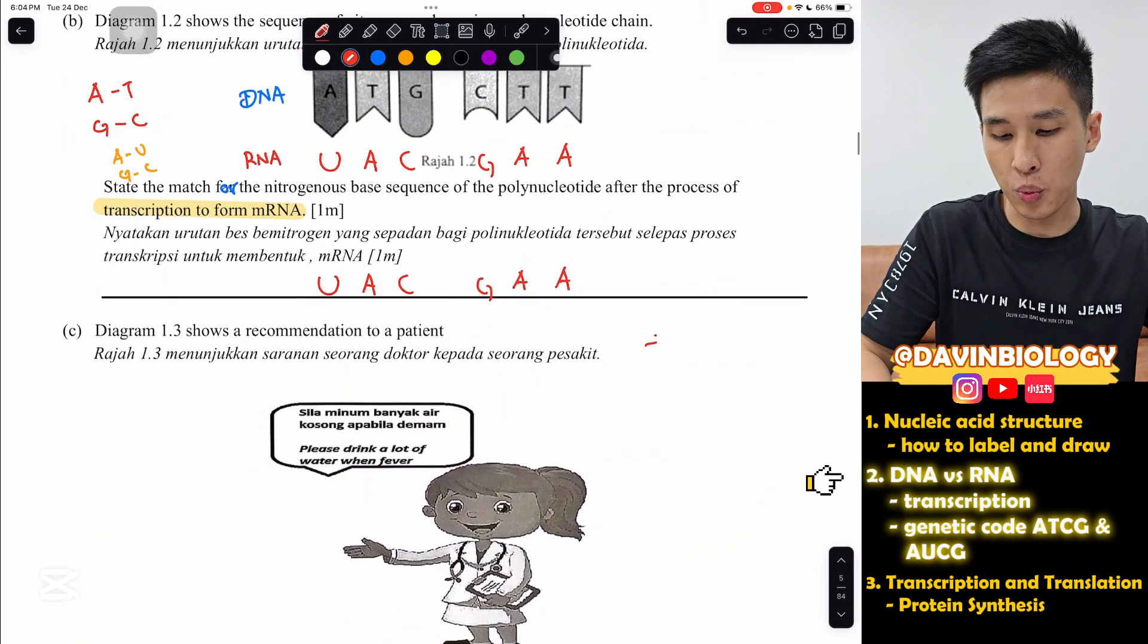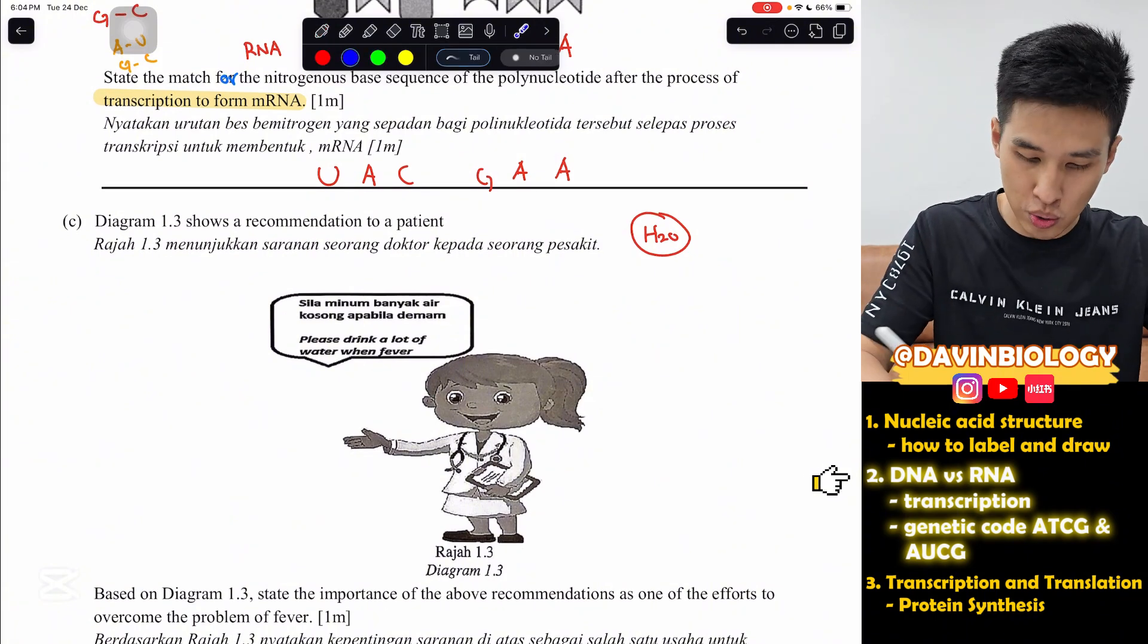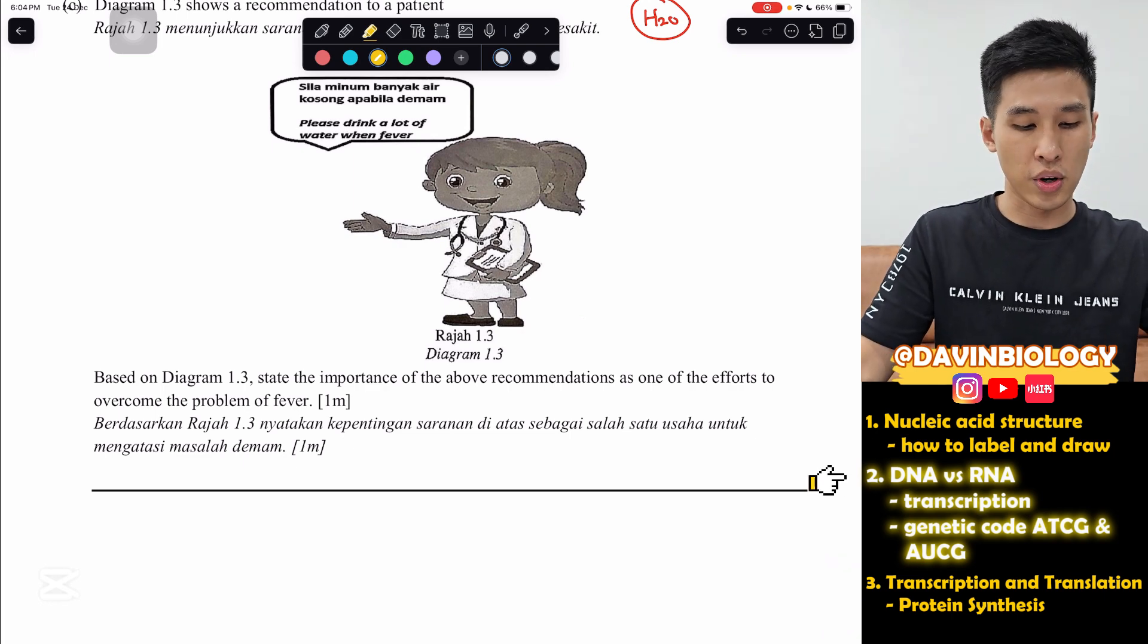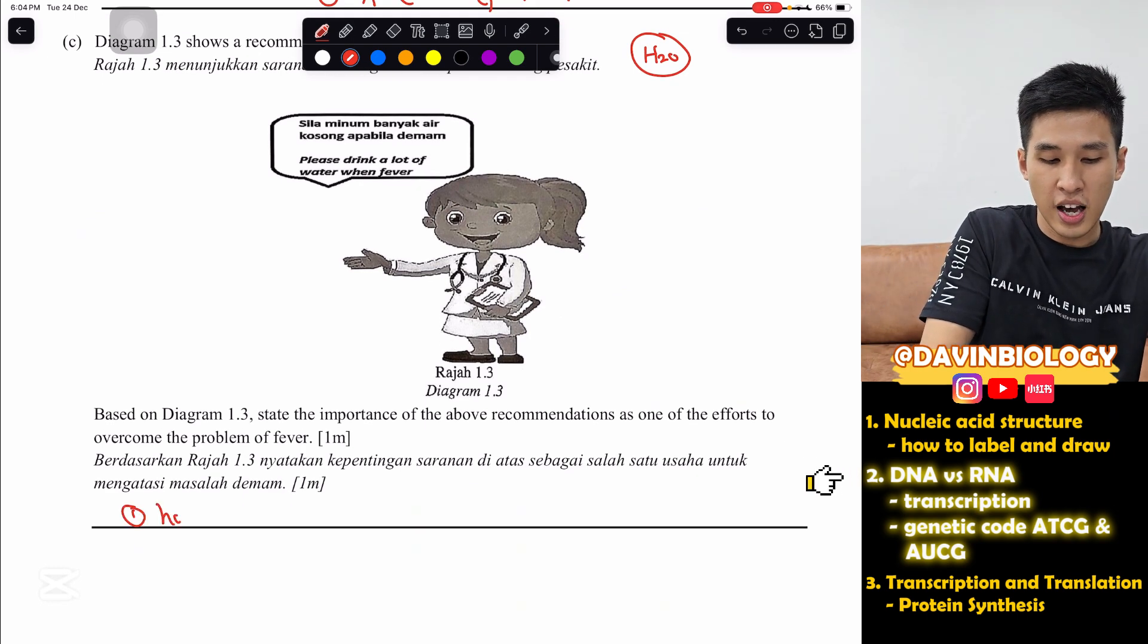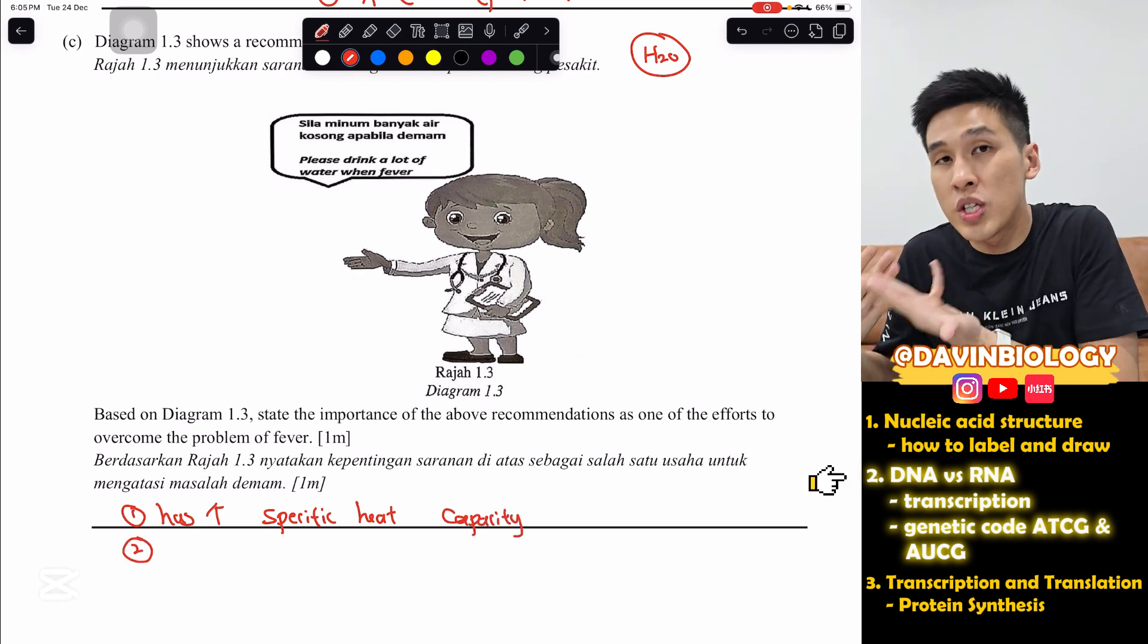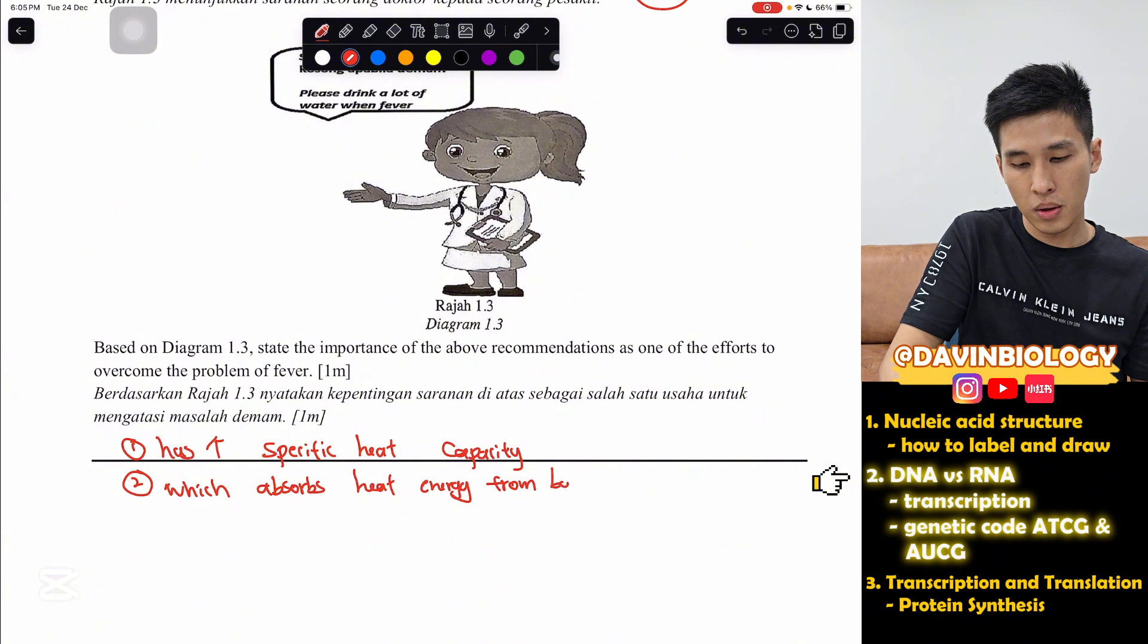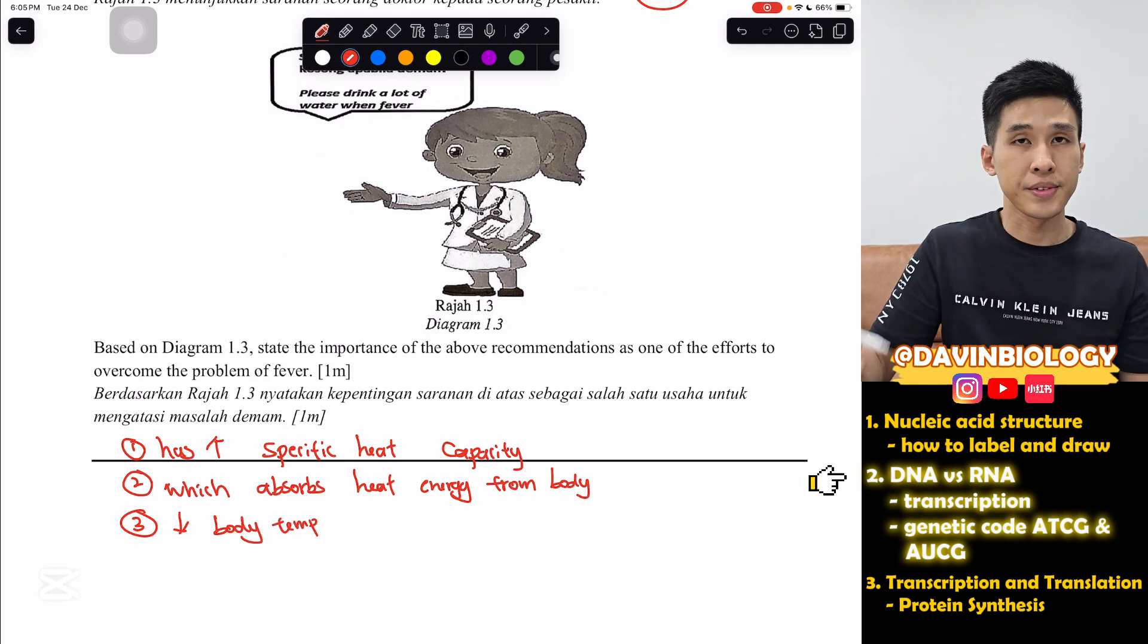And our last question is actually about water, 4.1 in this chapter. A very easy question they ask. This is what our moms always tell us. Ah, sick, drink water. You fever, never drink water. That's why you fever that time, must drink a lot of water. Our mom actually correct. State the importance of the above record mediation as one of the efforts to overcome problems of fever. Why fever must drink a lot of water? This is basically physics. Water has high specific heat capacity. The benefit of it, it absorbs heat from your body. So, it cools down, reduces your body temperature. Which absorbs heat energy from your body and decreases body temperature.